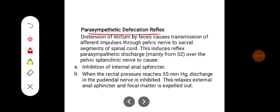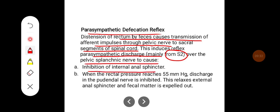Parasympathetic defecation reflex: distension of the rectum by feces causes transmission of afferent impulses through the pelvic nerve to sacral segments of the spinal cord. This induces reflexes, mainly from the S2 segment, over the pelvic splanchnic nerves to cause inhibition of the internal anal sphincter. When rectal pressure reaches 55 mmHg, discharge in the pudendal nerve is inhibited. This relaxes the external anal sphincter and fecal matter is expelled out.